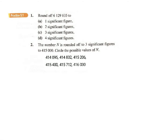Let's try to do Practice 5.1. For question 1, you have to round off a number. For part a, correct to one significant figure, the answer would be 6,000,000.